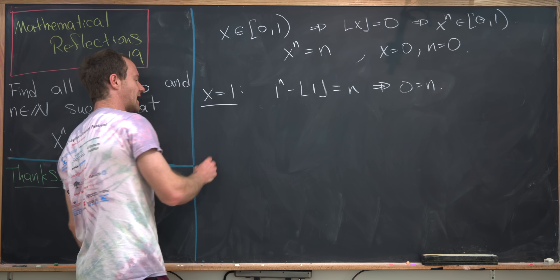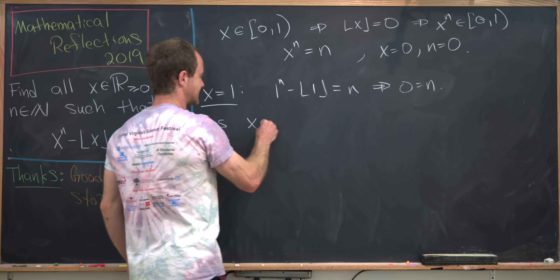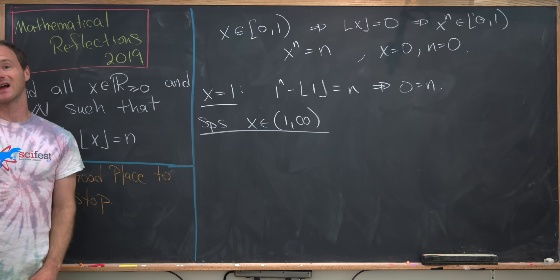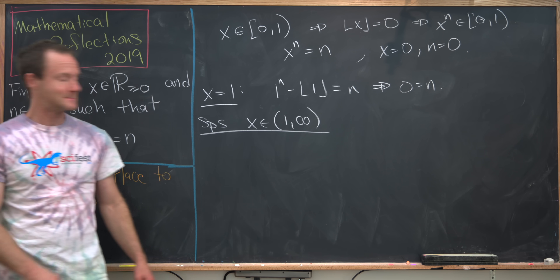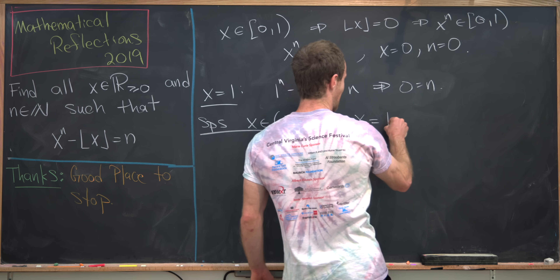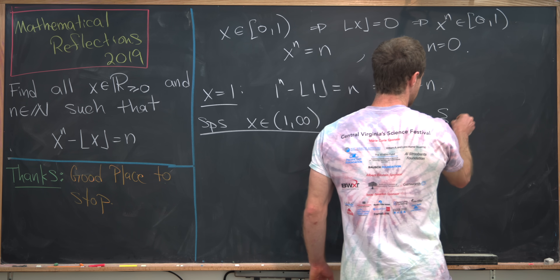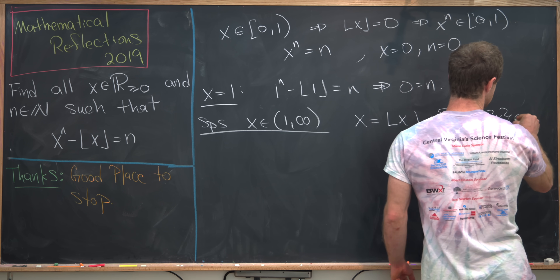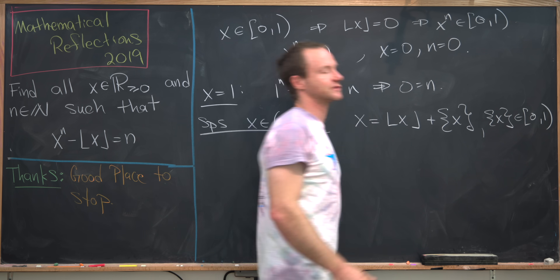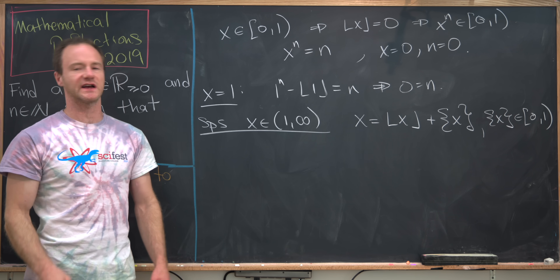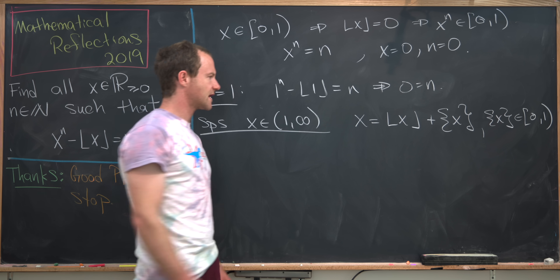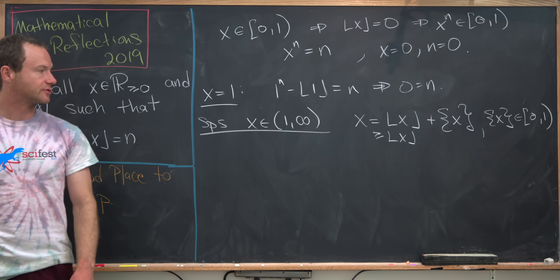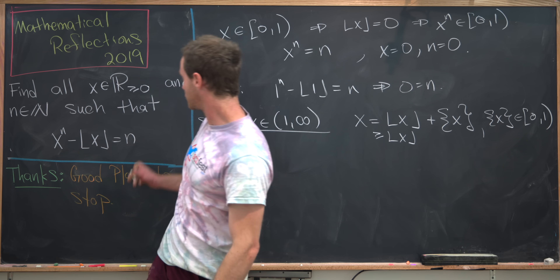Now let's look at the bigger case: x on the interval (1, ∞). We can write x as the floor of x plus the fractional part of x, where the fractional part is on the half-open interval [0, 1). The floor of x is an integer, and under this setup x is bigger than or equal to the floor of x. Now let's jump into our equation.